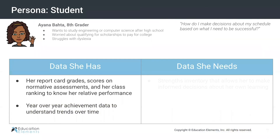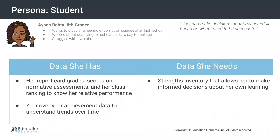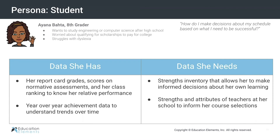Something that may be helpful for her is a strengths inventory, so she can make informed decisions — understanding what's going to be easier or harder for her. And something that is attainable but often not available to students unless they know who to ask is information about the teachers she's going to be with. You have to know who to ask and how to maneuver to get there. And we were thinking — if we are considering the inclusivity of data culture, why wouldn't we make that information available?